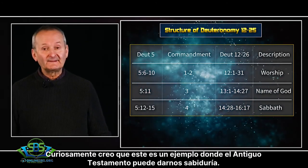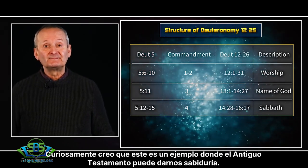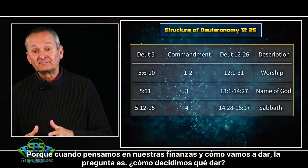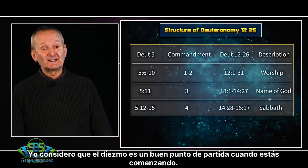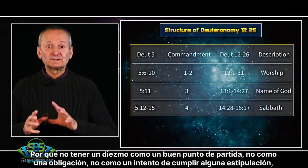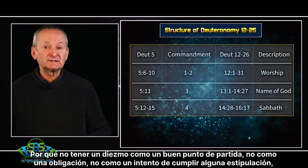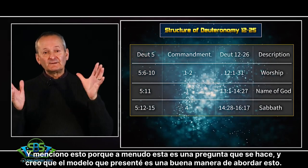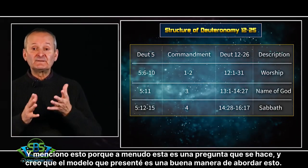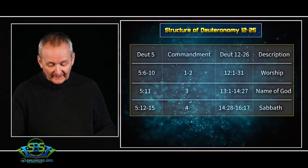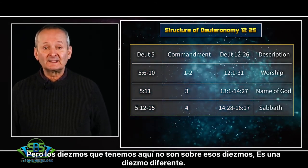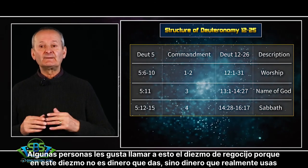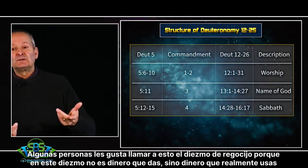Interestingly, I think this is an example where the Old Testament can give us wisdom. As we think about our finances and how we're going to give, the question is how do we decide what to give? I would suggest a tenth is a good starting point — not as an obligation, not as trying to keep a stipulation, but rather as a beginning point of generosity. But the tithe we have here in chapter 14 verse 22 is not about that tithe; it is a different tithe. Some people like to call this the rejoicing tithe, because in this tithe it's not money that you give — it's money that you actually use for yourselves.